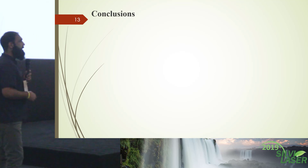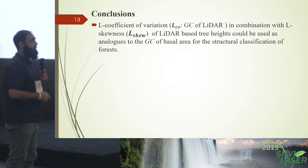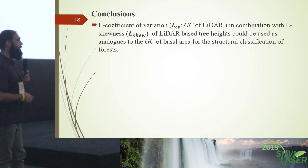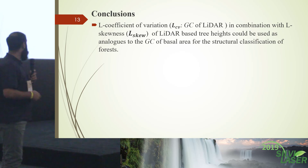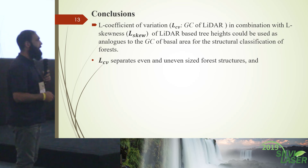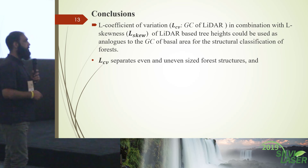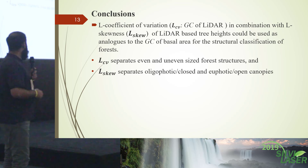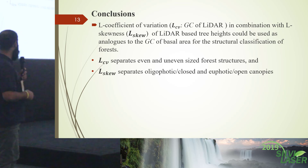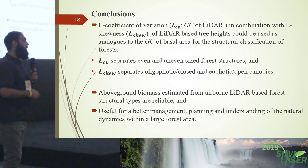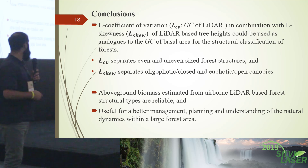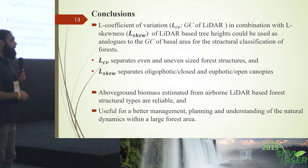In conclusion, the L coefficient of variation in combination with L skewness can be used analogously to the Gini coefficient of basal area for structural classification. L skewness will separate even and uneven size structures, and LCV will further differentiate them, while L skewness also separates closed and open canopies. The above-ground biomass estimates are reliable and can be useful for better forest management planning and understanding natural dynamics within large geographical areas.